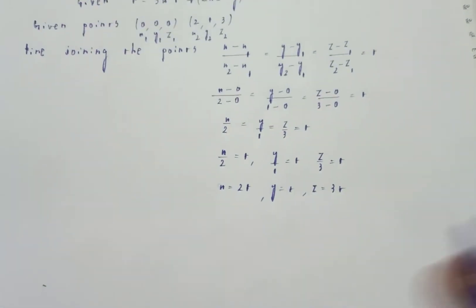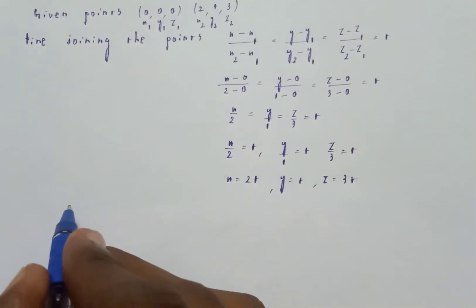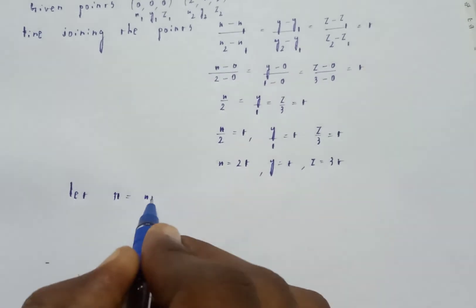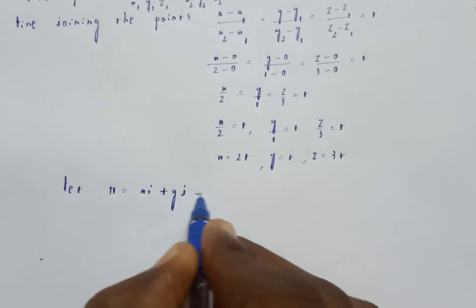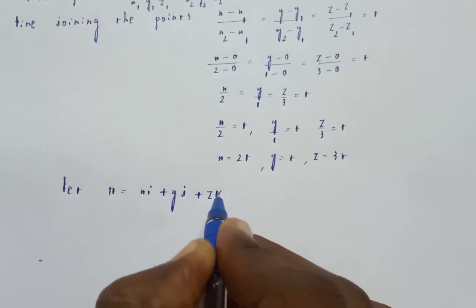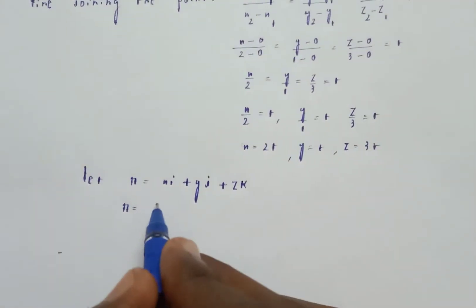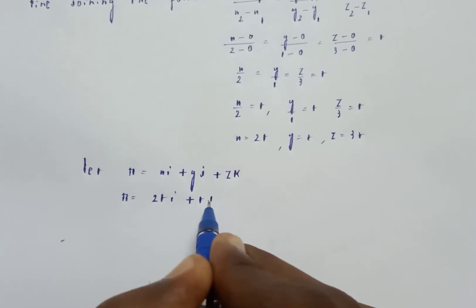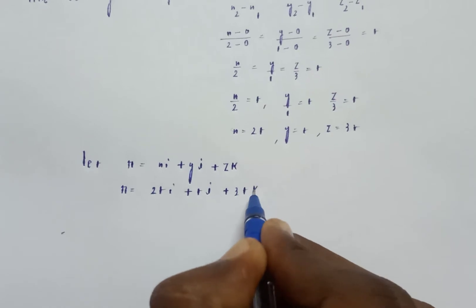Now r bar is equal to xi plus yj plus zk. So r is equal to 2ti plus tj plus 3tk.